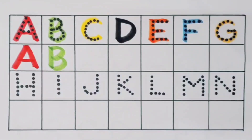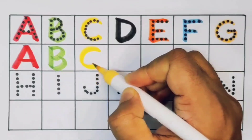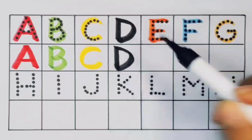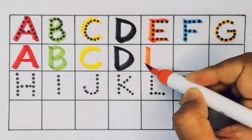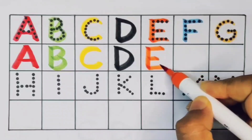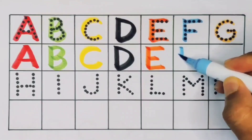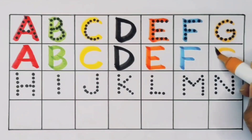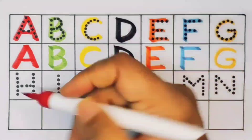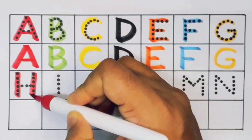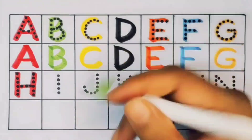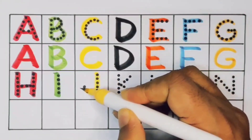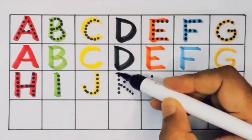Next, C, C for cat. Next, C, C for carrot. Next, D, D for duck. Next, E, E for eagle. Next, F, F for flower. Next, G, G for guitar. Next, H, H for hand. Next, I, I for insect. Next, J, J for jeep. Next, K, K for kettle.